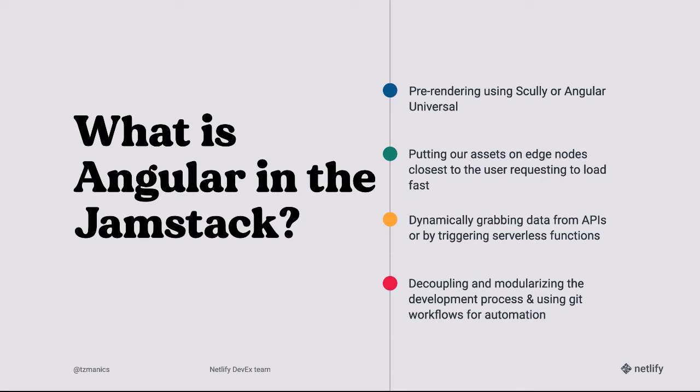Angular comes in on that pre-rendering side when we're basically making those static assets. We can do this either using Scully, the static site generator for Angular, or Angular Universal. We're putting our assets on edge nodes in that CDN closest to the user requesting and having it load fast. We're still dynamically grabbing data from APIs or by triggering serverless functions, and we're also still decoupling and modularizing the development process and using Git workflows for automation.